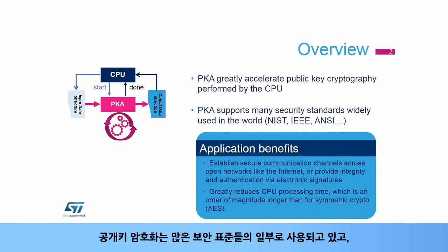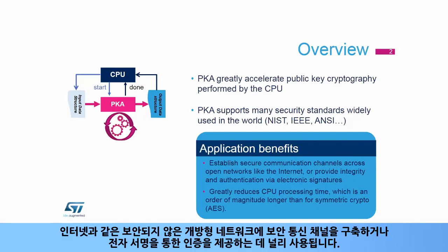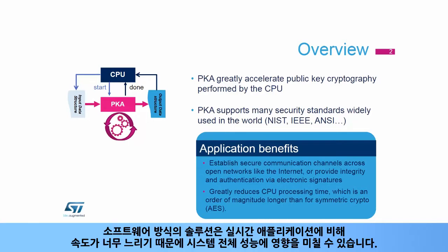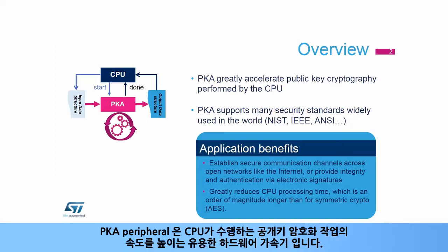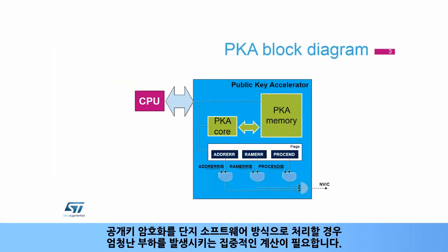Public key cryptography is part of many security standards and is widely used to establish secure communication channels across unsecure open networks like the internet, or to provide authentication via electronic signatures. Software-only solutions can be too slow for real-time applications, impacting the system's overall performance. The PKA peripheral is an efficient hardware accelerator that speeds up the public key cryptography operations performed by the CPU, as performing these operations represents a huge workload when done entirely by software.